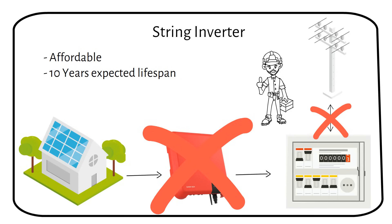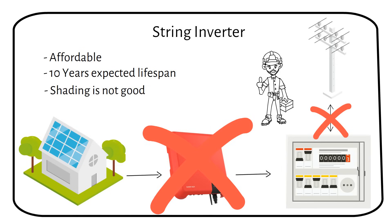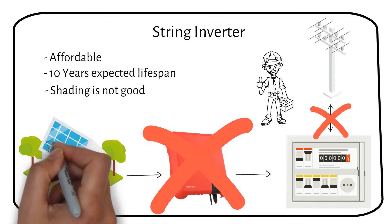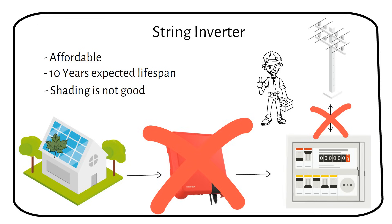Another downside is shading effects. If one panel in the string gets shaded from a tree or a building, the electricity made by the whole string drops. This differs from systems where each panel has its own inverter or optimizer. With a string inverter you also get less information about how each panel is doing, because it only shows how the whole system is working together, not each panel by itself. So while string inverters are a good low-cost option for getting into solar power, they do have some limits, especially if your roof gets shade or if you want detailed information on each panel's performance.